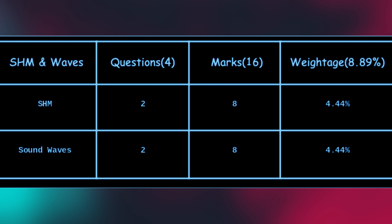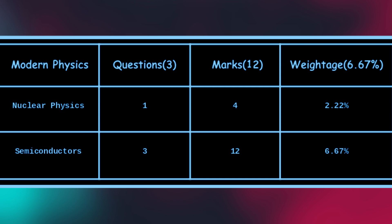The next unit with 16 marks weightage is SHM and waves. It has four questions of 16 marks and a weightage of 8.89% — SHM: two questions of eight marks; sound waves: two questions of eight marks. The last unit is modern physics — three questions of 12 marks; nuclear physics: one question of four marks; and semiconductors: three questions of 12 marks.